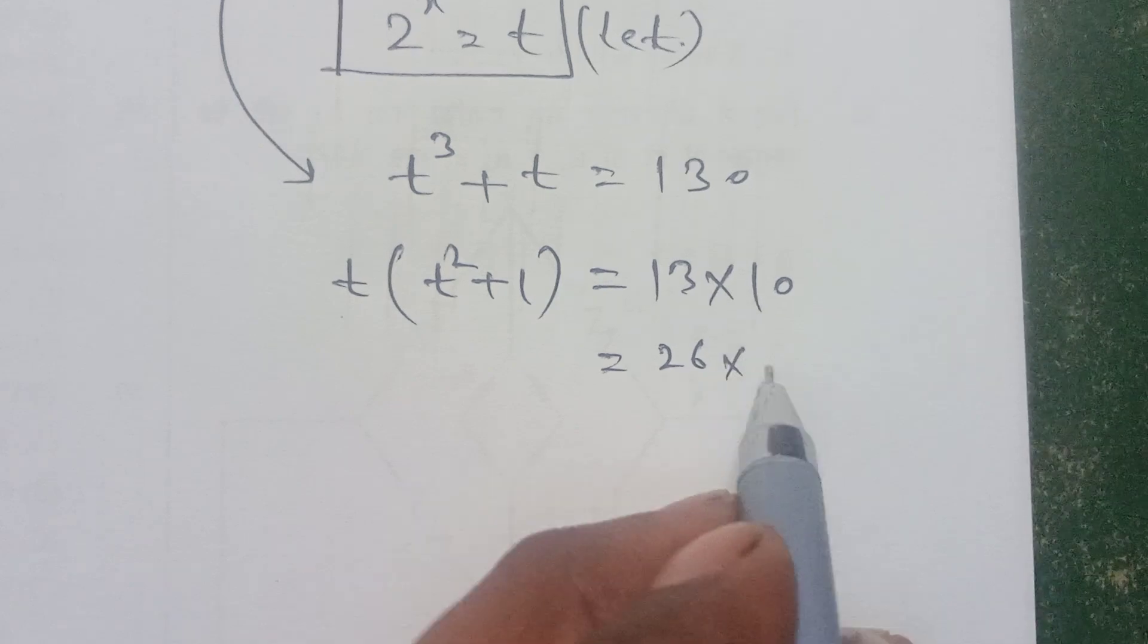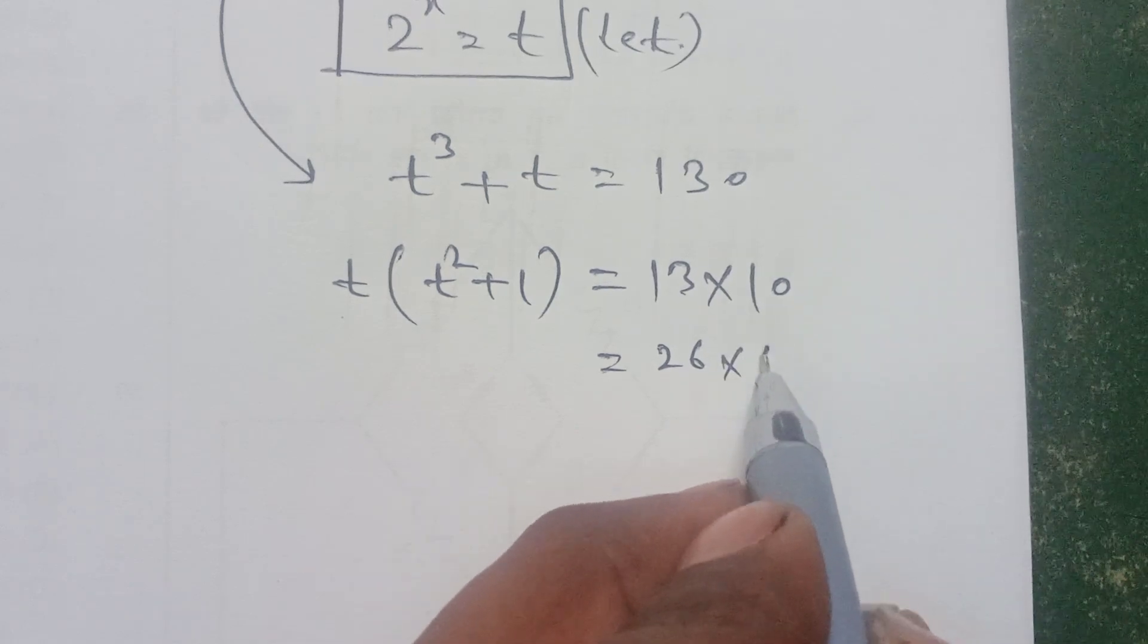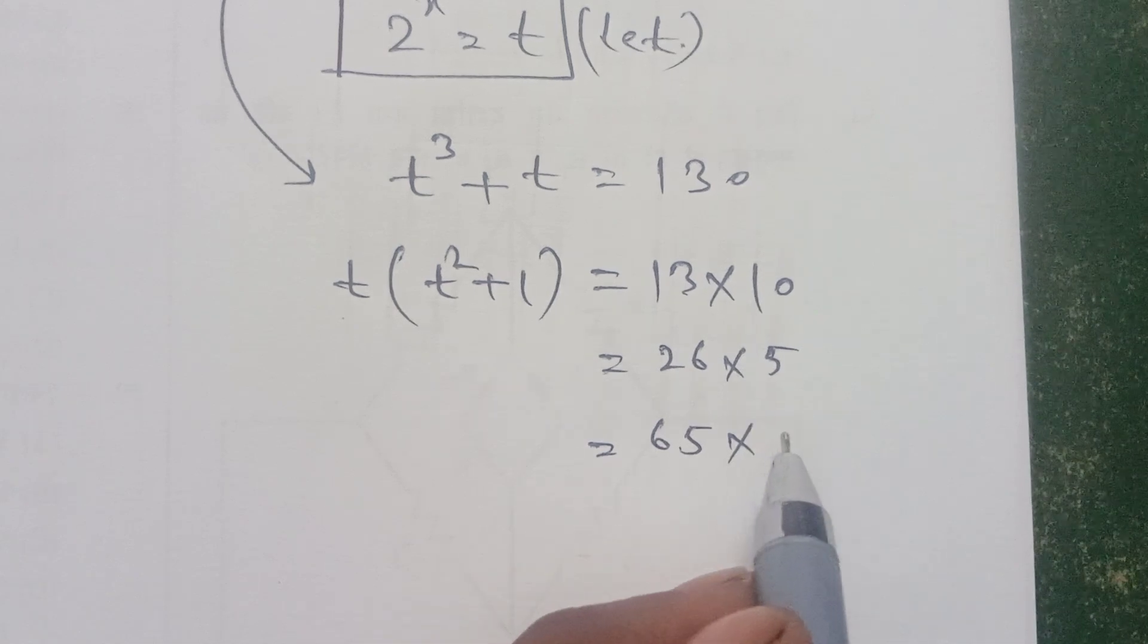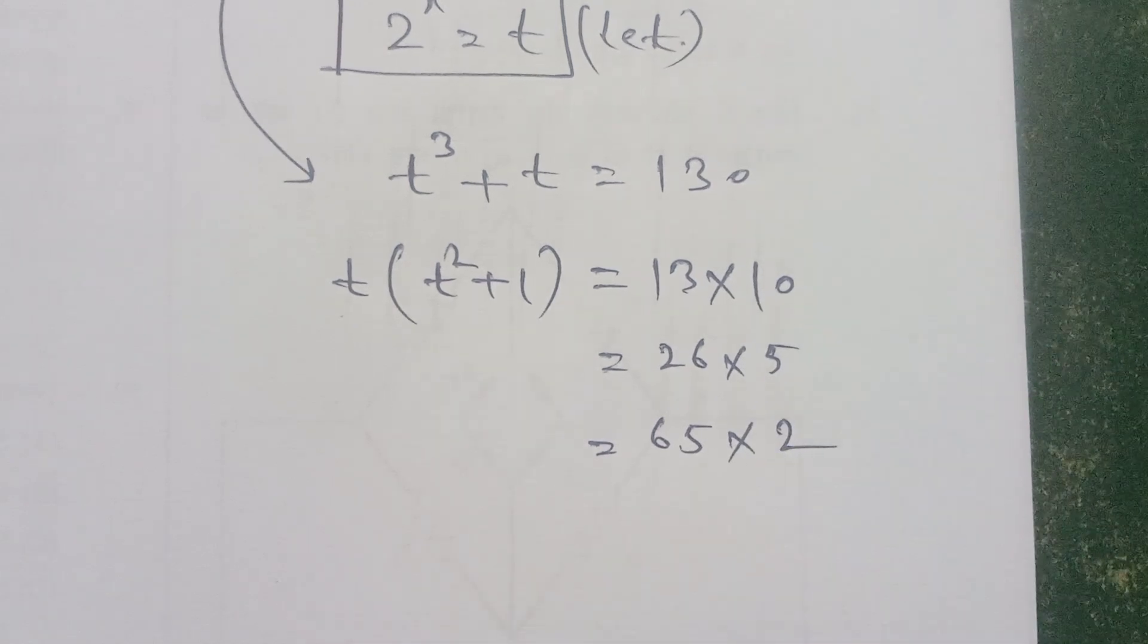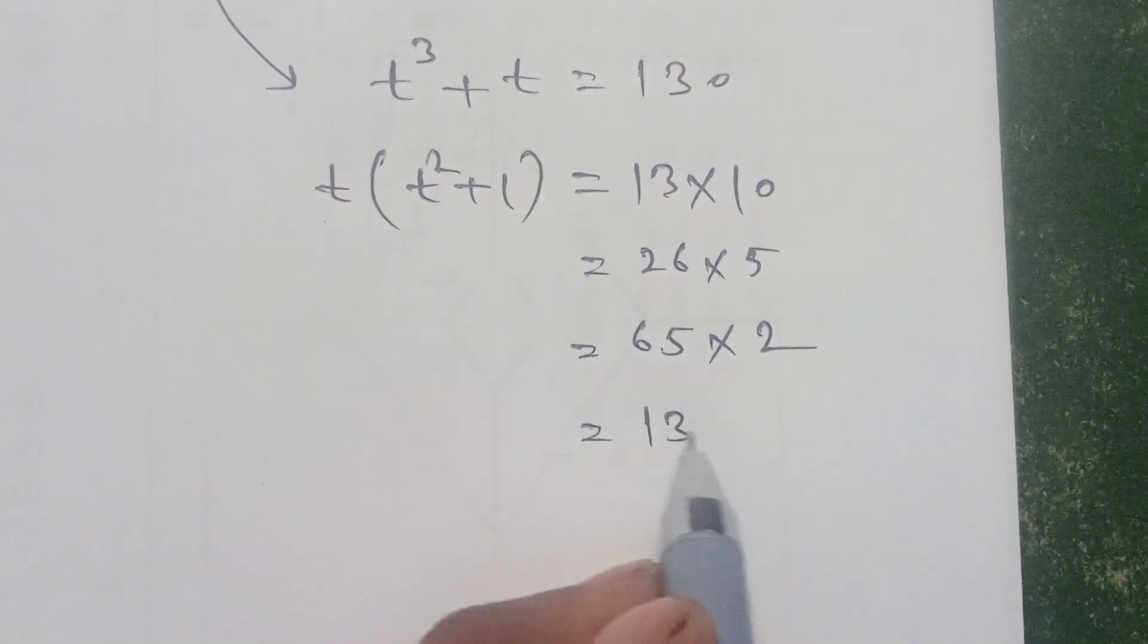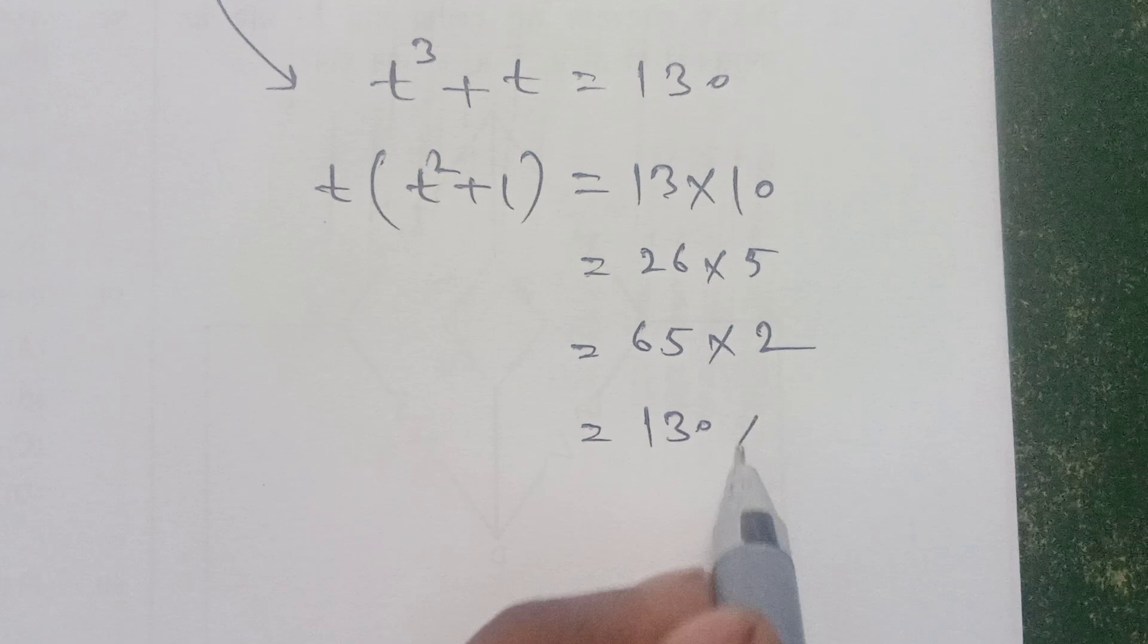130 can be written as 13 multiply 10, or 26 multiply 5, or 65 multiply 2, and 130 multiply 1.